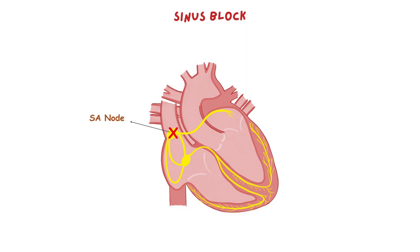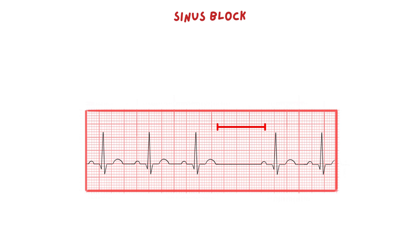First we have sinus block. An unhealthy sinus node may stop pacing for a short period of time, after which it restores its activity again. The sinus block on the ECG will be presented as a short pause — a flat baseline after a normal cardiac cycle. After the pause, because the SA node restores its activity again, the P waves will look exactly the same as the P waves before the pause.